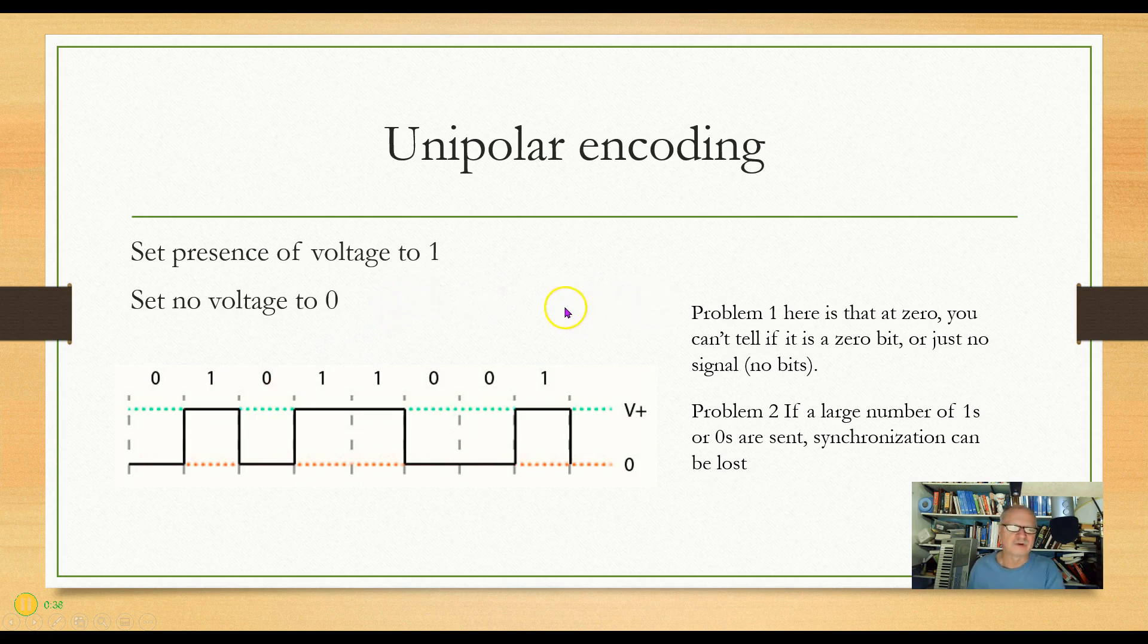It sounds simple, but there are a couple of problems. First of all, if there's a 0, how do I tell if that means a bit or if it means I just don't have any signal? A 0 bit is very different from no signal at all, but they look the same to this thing.